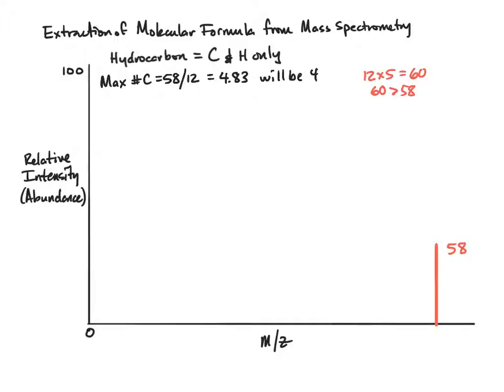Because this is a hydrocarbon with carbon and hydrogen, it not only has to have carbon, it also has to have hydrogen. So if we're greater than the data point we're given, that cannot be the maximum. So we're going to stick with 4 as the maximum number of carbons.